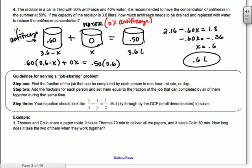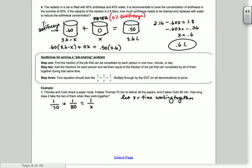All right, so it says Thomas and Colin share a paper route. It takes Thomas 70 minutes to deliver all the papers and it takes Colin 80 minutes. So that means in one minute, Thomas gets 1 70th of the job done. If it takes him 70 total minutes, he gets 1 70th of the job done in a minute. Colin does 1 80th of the job in a minute. Together they do, we don't know how long it takes them, so it's going to be 1 over X. So we're letting X equal the time working together.